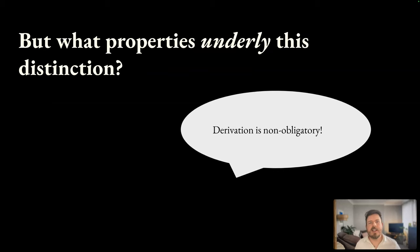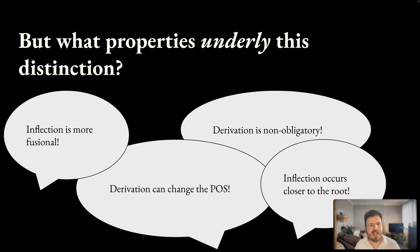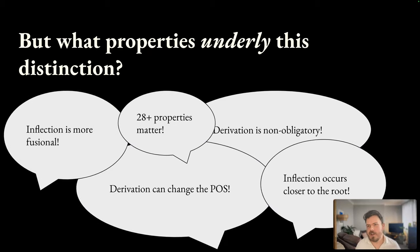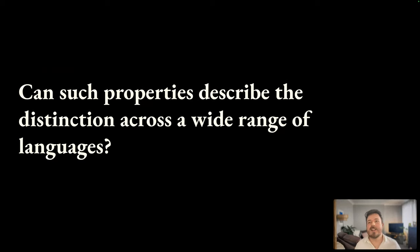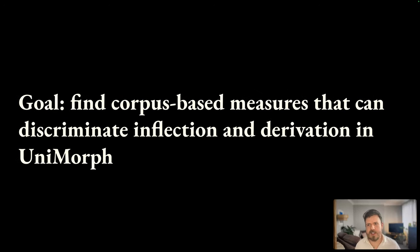However, linguists have argued extensively about what properties might underlie this distinction, citing many different properties which provide contradictory evidence for individual constructions. This has led some to question whether such properties can describe the distinction across a wide range of languages at all. So in this work, our goal is to shed light on this by finding corpus-based measures that can discriminate inflection and derivation in Unimorph.